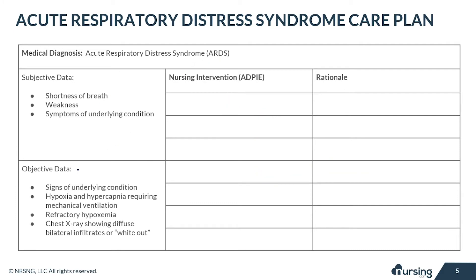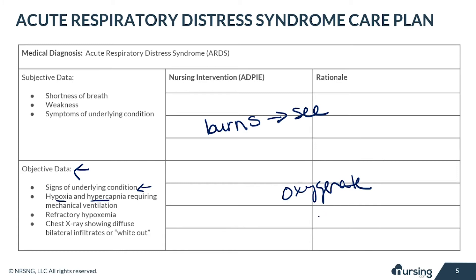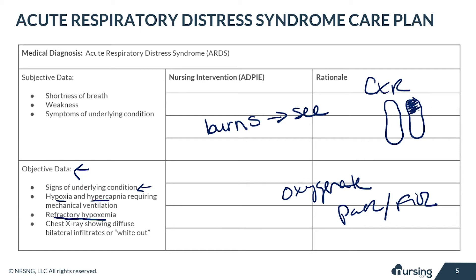For objective data, the patient might show signs of that underlying condition. The patient with ARDS will have hypoxemia and hypercapnia requiring mechanical ventilation, as they are unable to effectively oxygenate their own body. The patient will have refractory hypoxemia where the PaO2/FiO2 ratio is either mild, moderate, or severe. The chest X-ray will show diffuse bilateral infiltrates or a whiteout in the lungs — normally the lungs appear black due to air, but here they appear white because they are full of fluid.